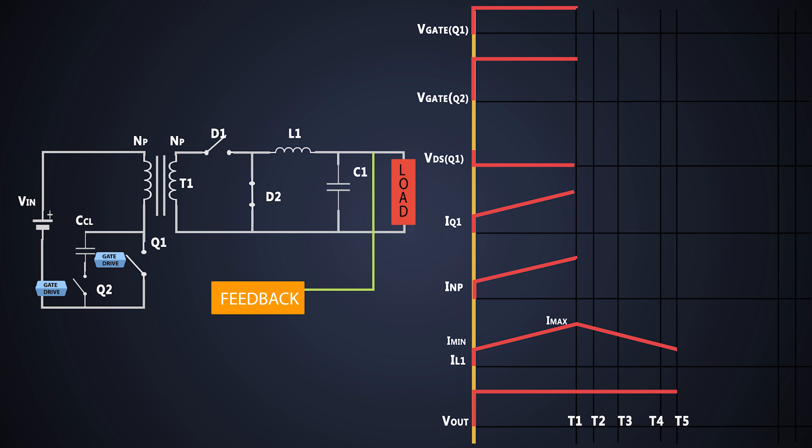So let's divide the primary circuit according to the time period. Initially at time T1 MOSFET is turned OFF by removing the gate voltage and MOSFET Q2 is also kept OFF by providing constant gate voltage. But still, this primary current flows in the same direction through the body diode of the MOSFET Q2.